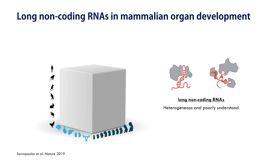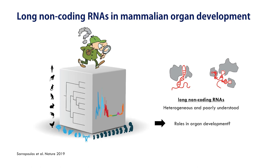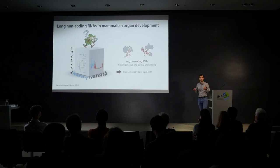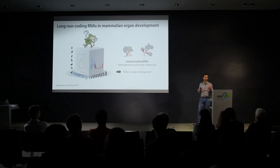I started by looking into long non-coding RNAs, which are this group of transcripts that do not encode for proteins. They're quite heterogeneous and poorly understood. The idea was to utilize a large-scale transcriptomic dataset covering the development of several organs in seven species to identify long non-coding RNAs that could play roles in mammalian organ development based on their expression profiles and evolutionary conservation. For this talk, I will focus on my more recent work on cis-regulatory elements.